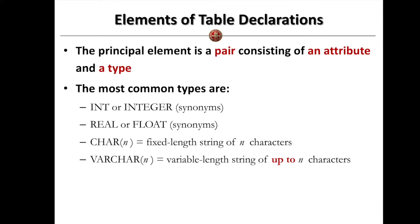Sometimes the strings we have in our database system can be varying. For different cases, like the names of a person, the name can be different for different people. In that case, we can declare the name of a person as varchar(n), where n is also a number. It denotes a variable-length string with up to n characters inside the string. So this n denotes a maximum length. You can differentiate these two: char(n) denotes a fixed-length string with n characters, while varchar(n) denotes a variable-length string with up to n characters. So they are different.